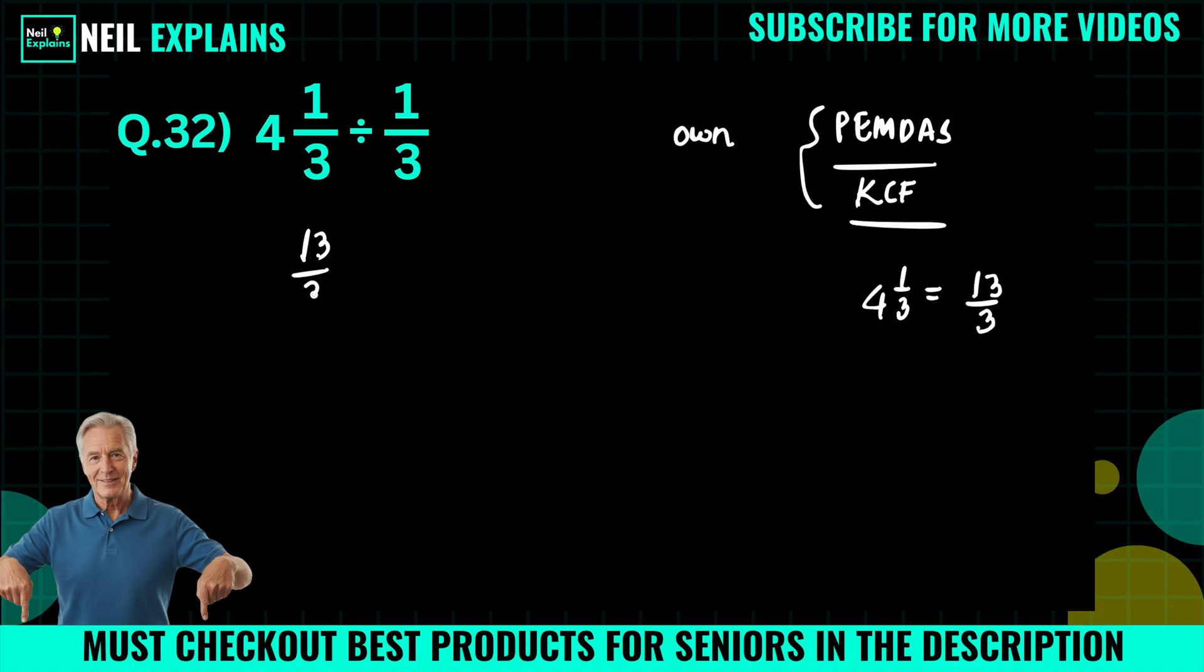Here 13 divided by 3 divided by 1/3. Now both are fraction values, so we will use here the KCF rule: keep, change, and flip. We will keep 13/3 as it is, this division will be changed to multiplication.